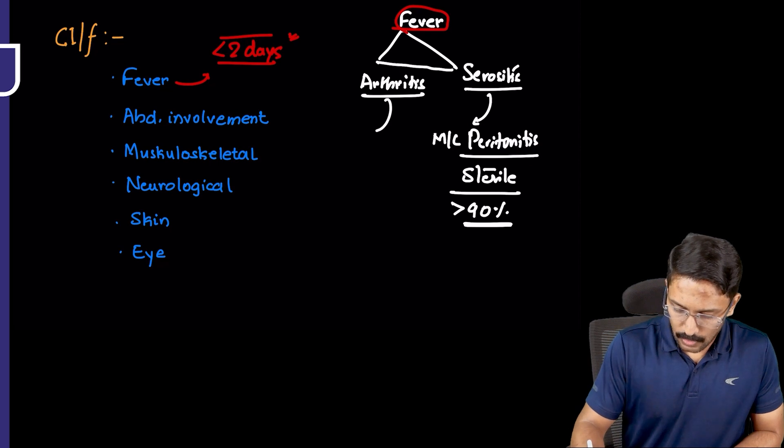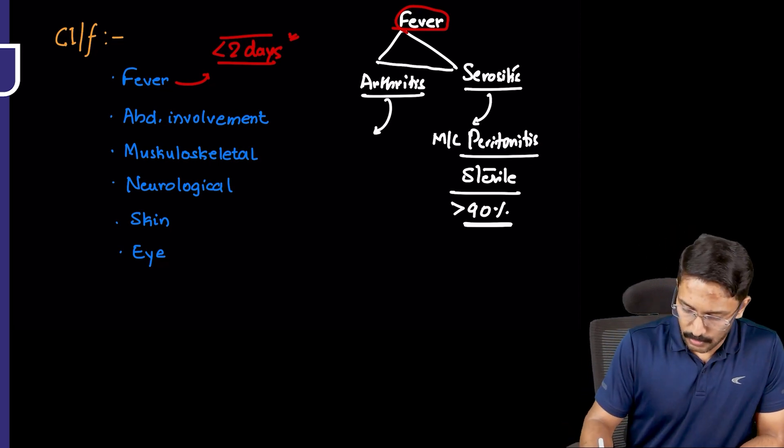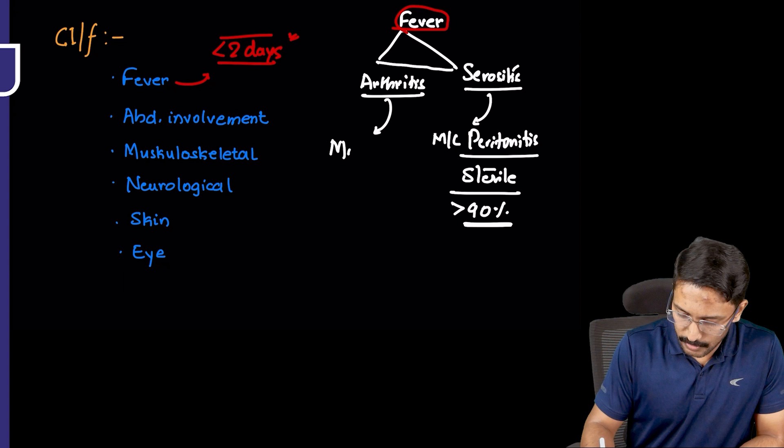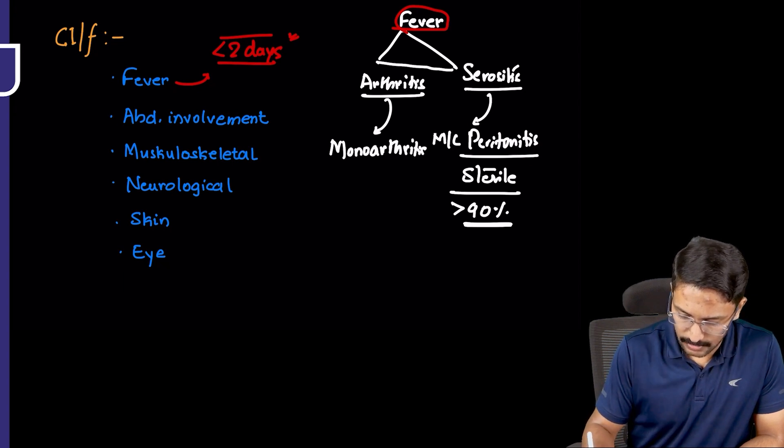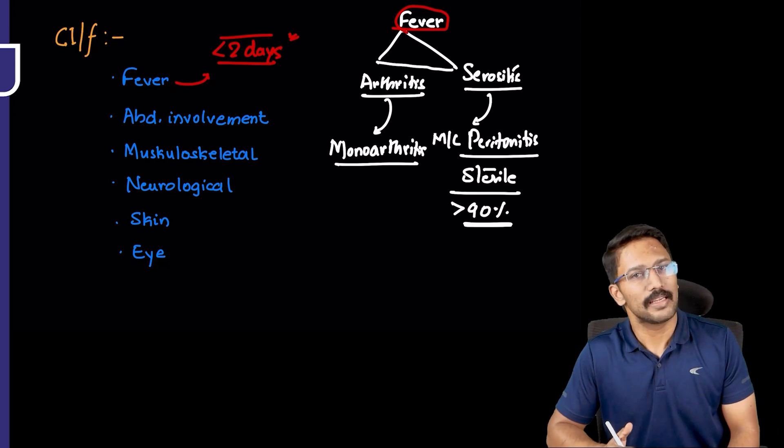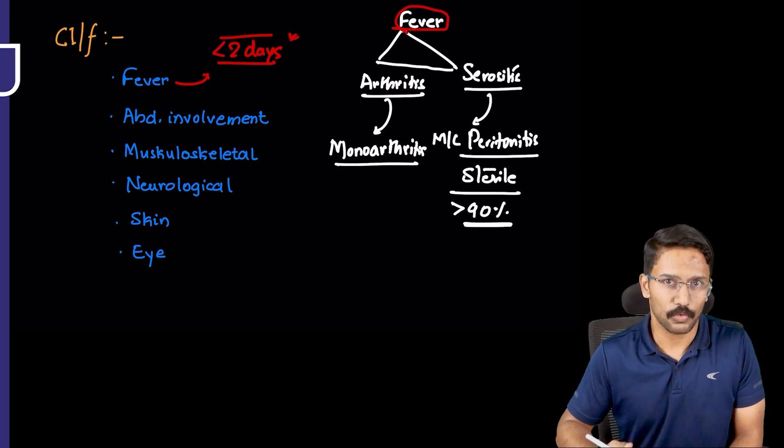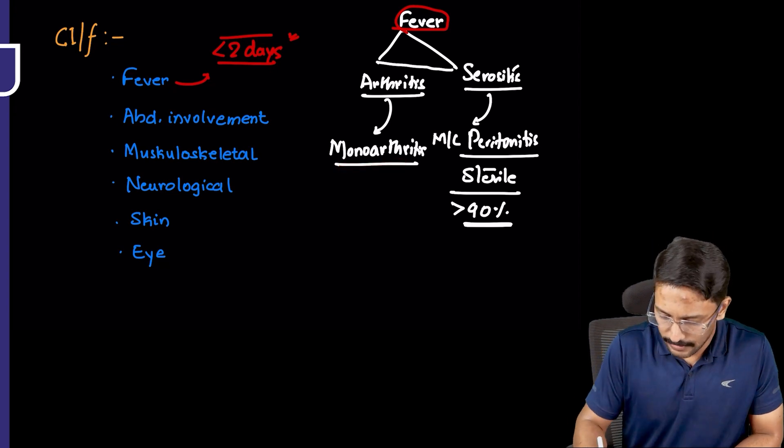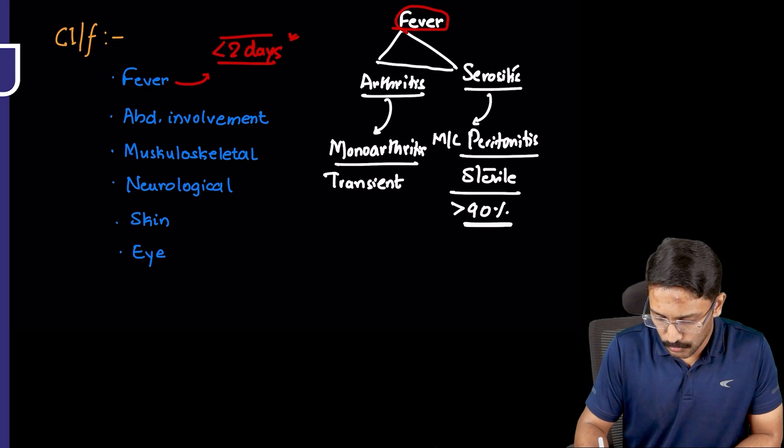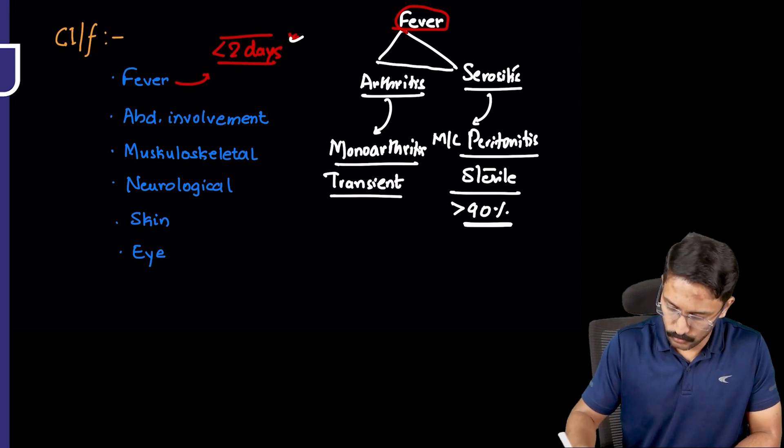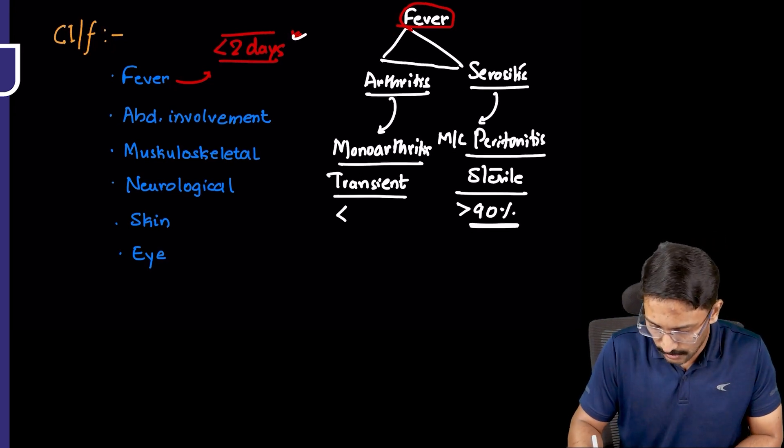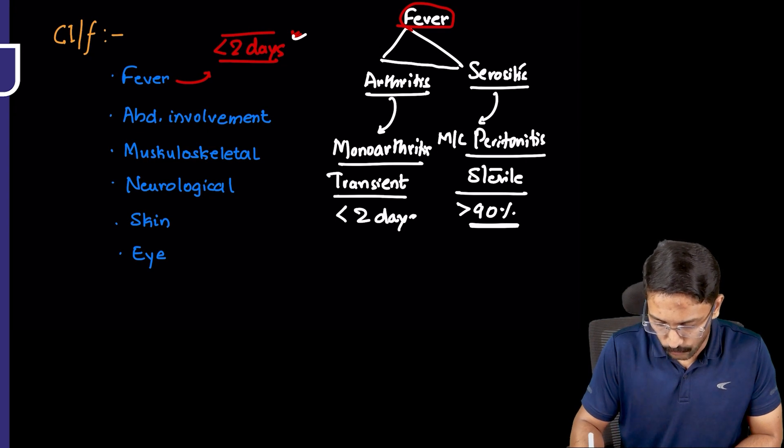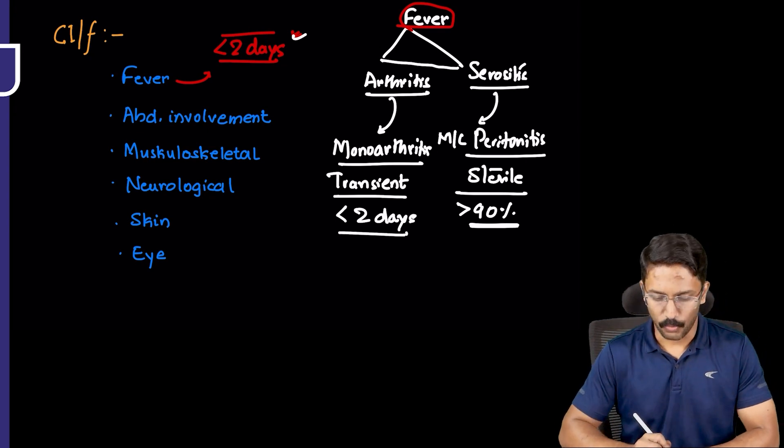Arthritis also accompanies fever episodes. Arthritis here, typically monoarthritis. One joint will show inflammatory changes. This is also going to be transient because the inflammatory episode is transient, fever lasting less than two days. So even the monoarthritis will last less than two days or 48 hours.